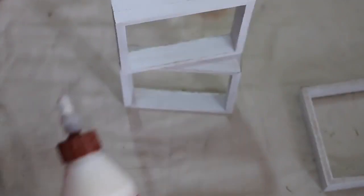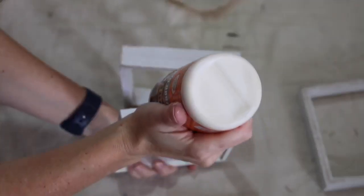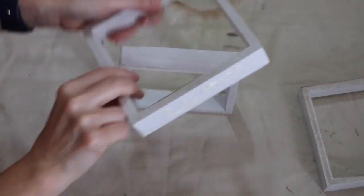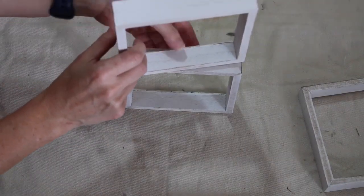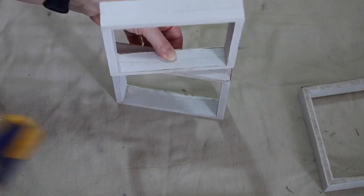Once your paint has dried, you want to go in with some wood glue. I'm using Gorilla and place a little bit of glue on one of your boxes. Here I have chosen to do it at an angle. You can go at an angle or you can stack them straight.